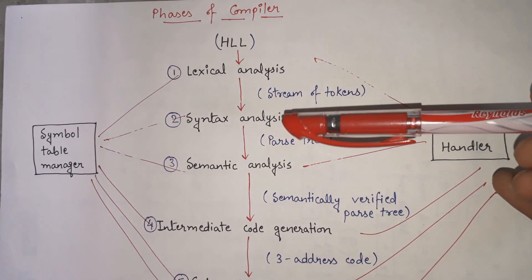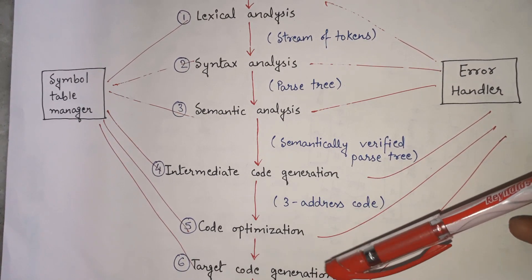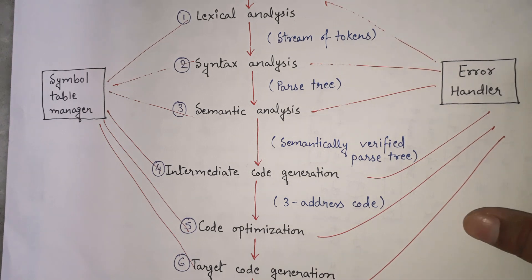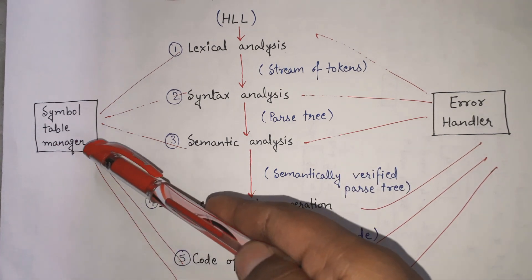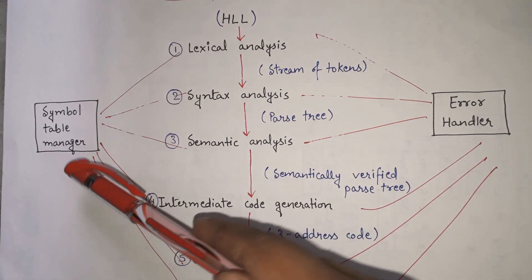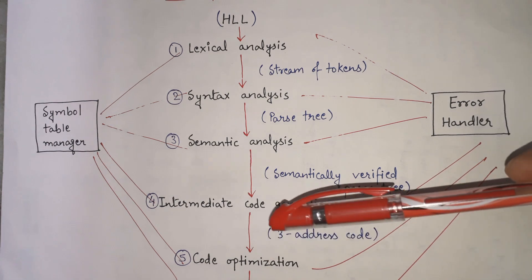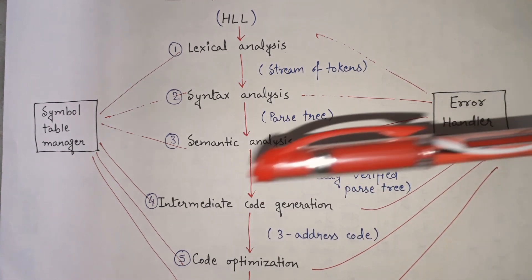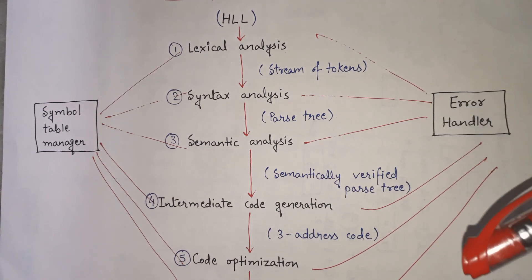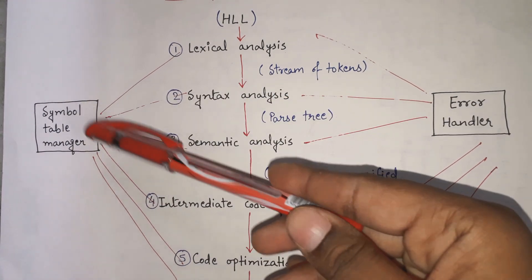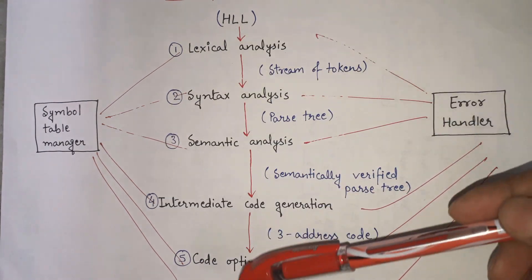Lexical analysis, syntax analysis, semantic analysis, intermediate code generation, code optimization, and target code generation — these are the six main phases of any compiler. We have seen in detail what all the phases are doing. Now, I have also told you that we have something called symbol table manager and error handler, and these two are connected with all the phases of the compiler.